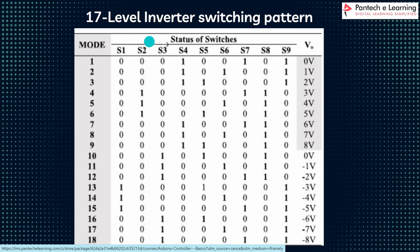This is the switching pattern for the 17-level inverter. According to this mode table, the circuit will be operated and the output is produced. Here, 0 is the OFF state and 1 is the ON state. According to this, the levels are produced.